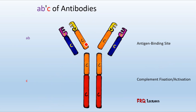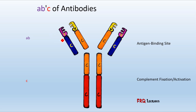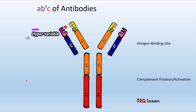The constant regions of the heavy chain are labeled CH1, CH2, and CH3 — where C stands for constant and H for heavy. Some antibodies also have an additional CH4 region. The variable region of the light chain is called VL, and the constant region of the light chain is called CL. The portion where antigens actually bind is known as the hypervariable region.